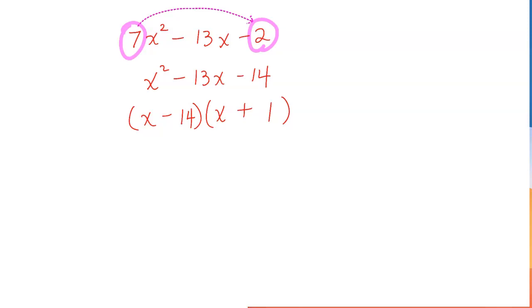Now let's divide both the 14 and 1 by 7. Like I said, if it divides evenly, then you're going to divide. For example, 14 divided by 7 is 2, so x - 2.